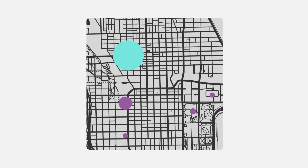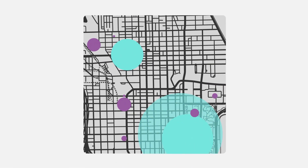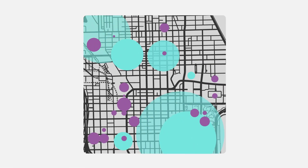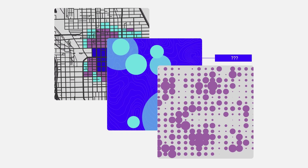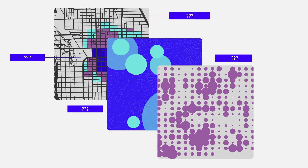GIS enables strong public policy. Government officials can effectively layer information from different disciplines and ask questions that can be further explored through tools like virtual 3D modeling.